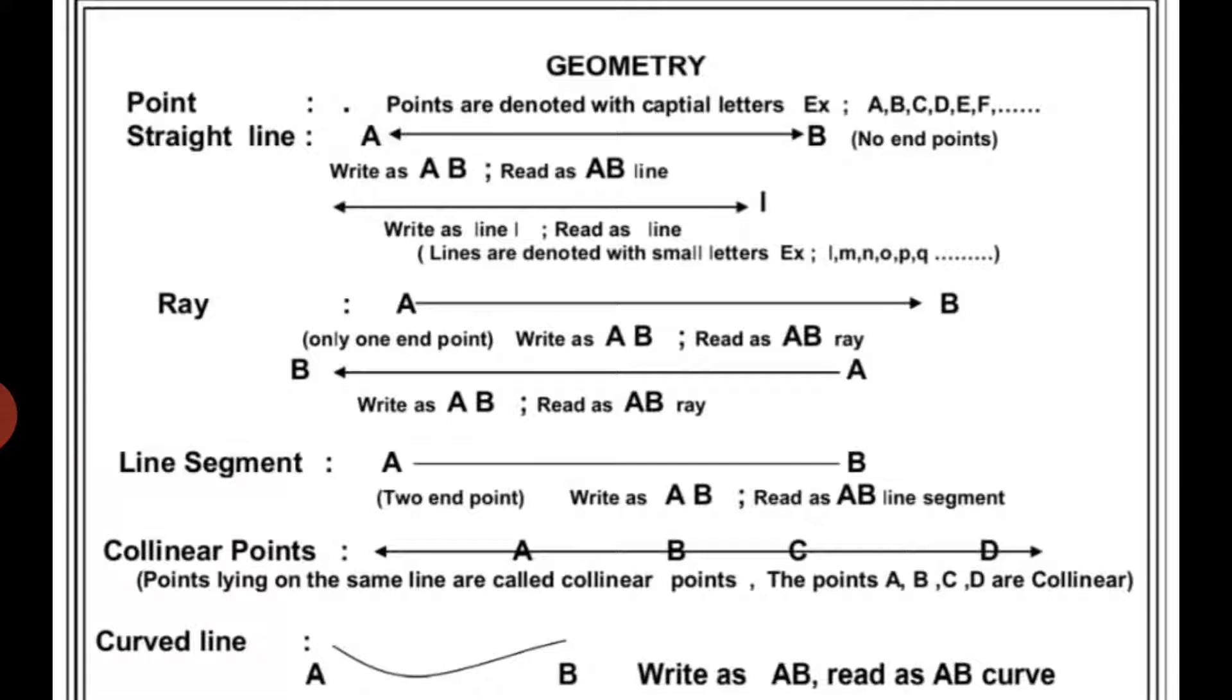So the primary concepts are Point. Points are denoted with capital letters. Example, A, B, C, D, E, F and so on. A straight line.